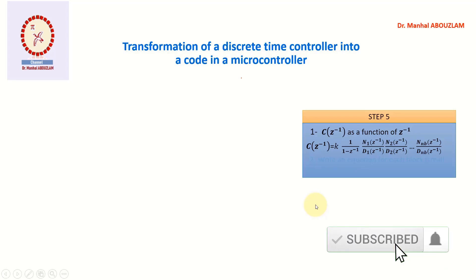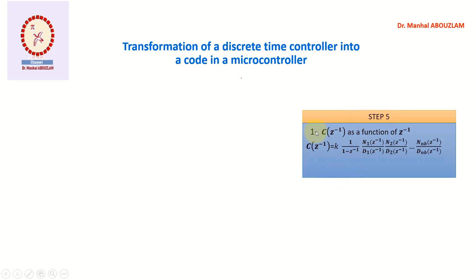Hello everyone, I'm Dr. Mohab Ouzlam. We resume our course — we are now in Step 5. We did the first point in this step where we broke down our controller into smaller transfer functions and wrote our controller as a function of z power negative one. Now for the second point — in fact the final step — we will write an equation for each block, for each small transfer function.